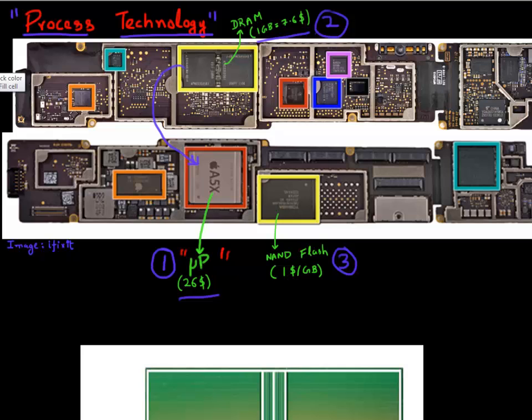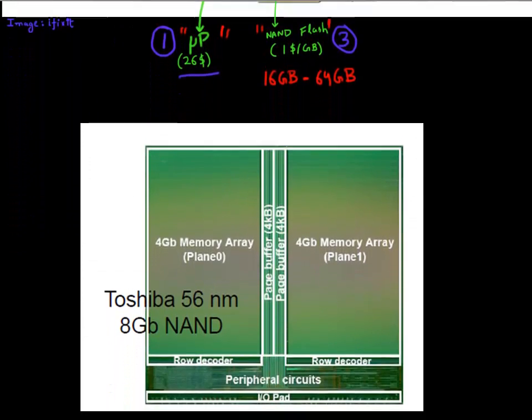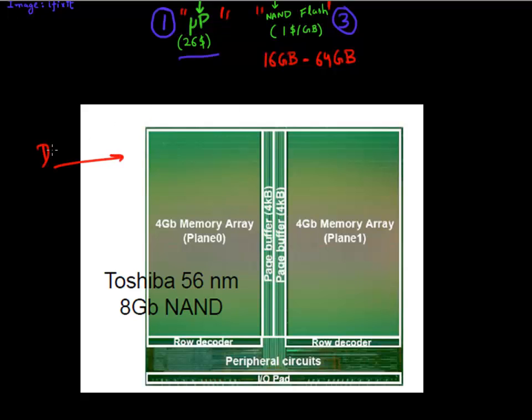So finally, let's take a look at this NAND flash memory chip. As I mentioned earlier, your iPad or your iPhone has anywhere between 16 gigabyte to 64 gigabyte of this storage, all of which is essentially in the form of this NAND flash memory. And when you open up this NAND flash memory chip, you see multiple of these NAND flash dies stacked on top of each other. This is from a slightly older technology, 56 nanometer.